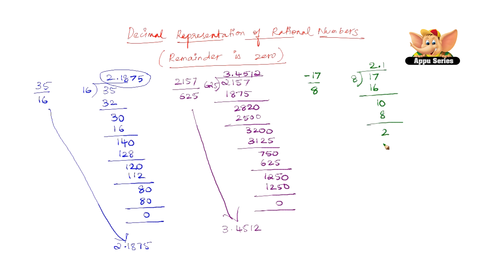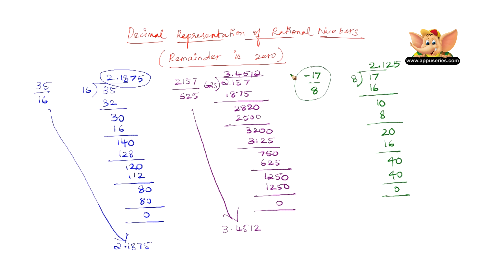Remainder 2 is not divisible by 8, so add another 0. 8 two times is 16, remainder is 4. 4 is not divisible by 8, so add another 0. 8 five times gives 40, remainder is 0. So 2.125 is the decimal representation of 17 by 8. But the question is minus 17 by 8, so the answer is minus 2.125.